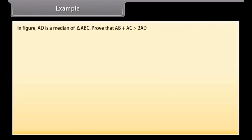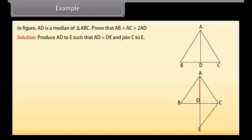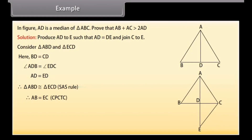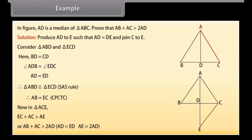Example: in the figure, AD is a median of triangle ABC. Prove that AB plus AC is greater than 2AD. Solution: produce AD to E such that AD is equal to DE and join C to E. Consider triangle ABD and triangle ECD. Here BD is equal to CD, angle ADB is equal to angle EDC, and AD is equal to ED. Therefore, by SAS congruence rule, triangle ABD is congruent to triangle ECD. Therefore AB is equal to EC by CPCTC. Now in triangle ACE, EC plus AC is greater than AE, which means AB plus AC is greater than 2AD, because AD equals ED implies AE equals 2AD.